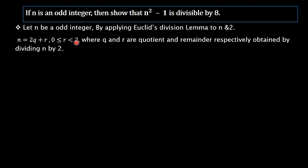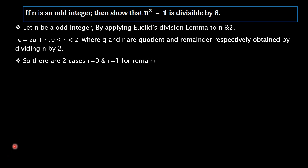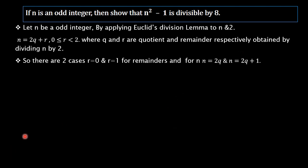According to Euclid's Division Lemma, the remainder r has two choices: r = 0 and r = 1. So n also has two choices. When r = 0, n = 2q, and when r = 1, n = 2q + 1.